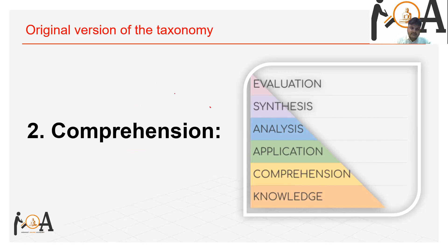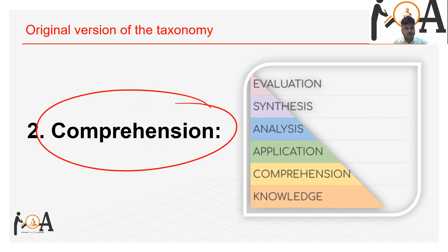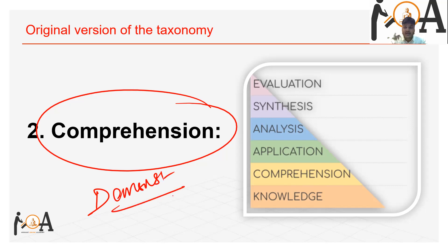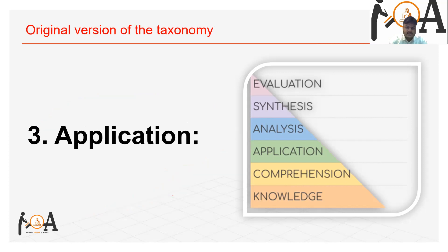The second level is Comprehension. Comprehension involves demonstrating understanding of facts and ideas by organizing, summarizing, translating, generalizing, giving descriptions, and stating the main ideas. A lot of raw data is organized and summarized by translating and giving main ideas — that is what comprehension involves.